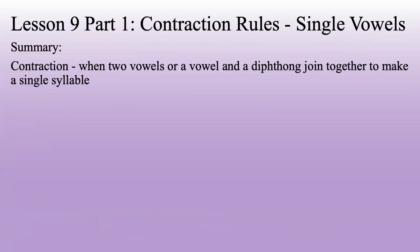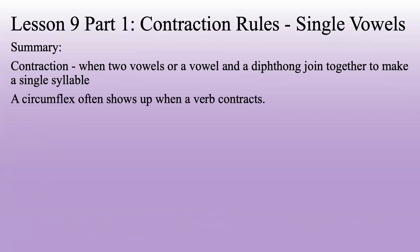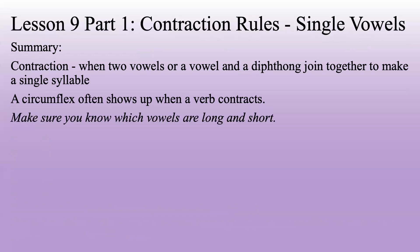Summary: contraction is when two vowels, or a vowel and a diphthong, join together to make a single syllable. A circumflex often shows up when a verb contracts. Make sure you know which vowels are long and which are short.